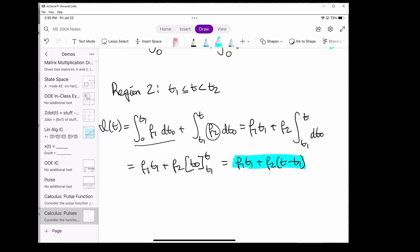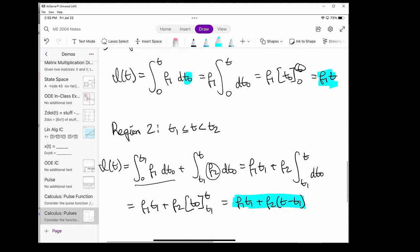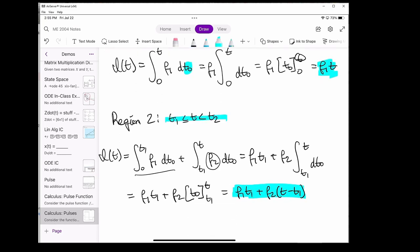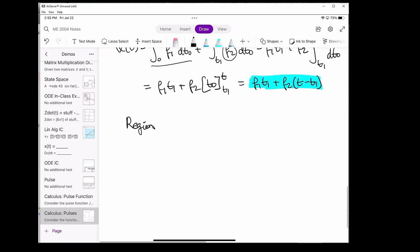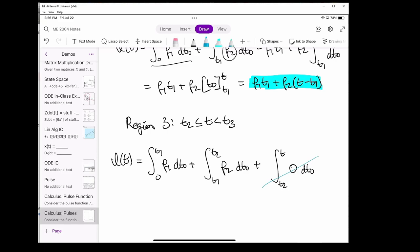And for the third region, we can do something pretty similar. Now we have three regions to integrate. The first region accounts for the first case, right here. The second case accounts for the second region, right here. And the third case accounts for the time from t2 to t3.